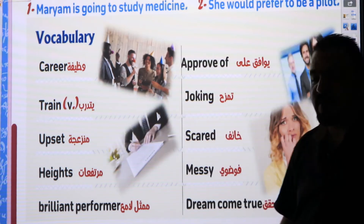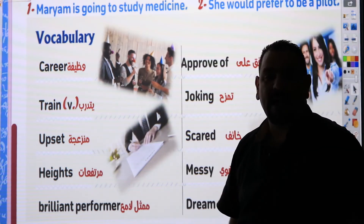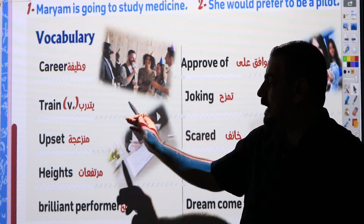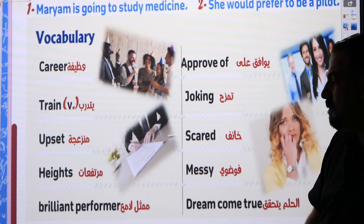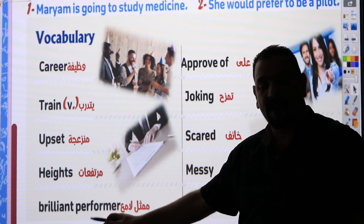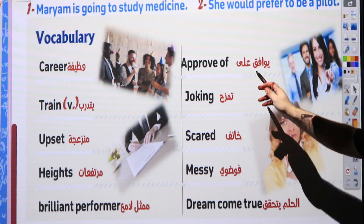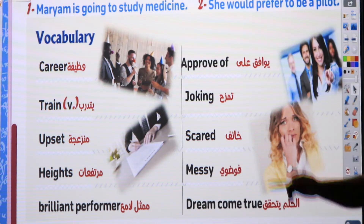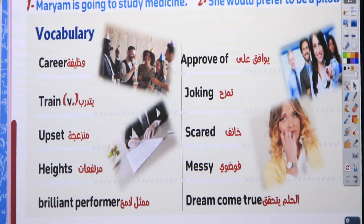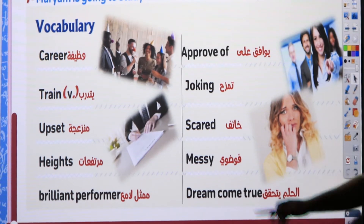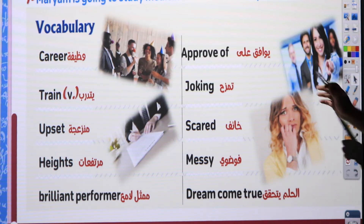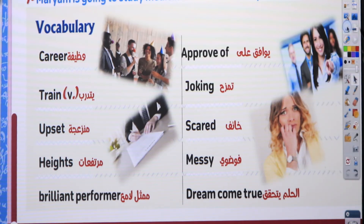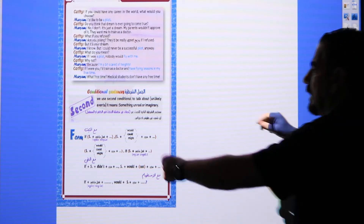Important vocabulary from the dialogue: 'career' means وظيفة; 'train' as a verb means يتدرب; 'upset' means منزعجة; 'heights' means مرتفعات; 'brilliant performer' means ممثل لامع; 'approval' means يوافق على; 'joking' means تمزحين; 'scared' means خائف; 'messy' means فوضوي; 'dream come true' means الحلم يتحقق.